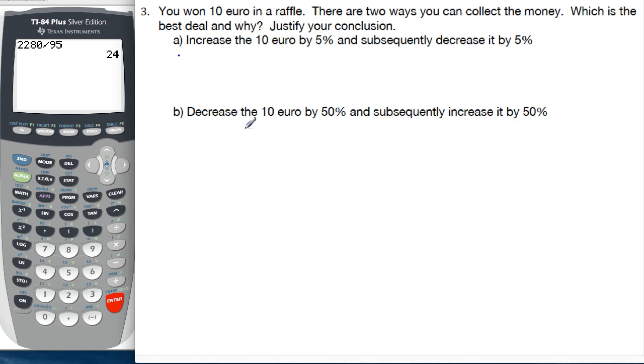Example 3. You won 10 euros in a raffle. There are two ways you can collect the money. Which is the best deal and why? Nice command term here from the IB. Justify your conclusion, so provide some evidence. So we can either increase the 10 euros by 5% and then decrease it by 5%, or decrease it by 50% and then increase it by 50%. It's a nice problem. Let's get going.